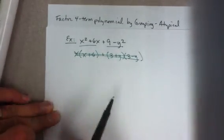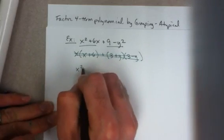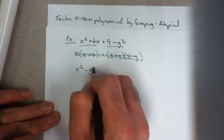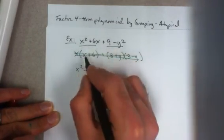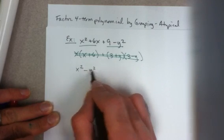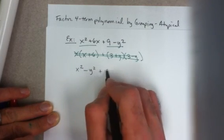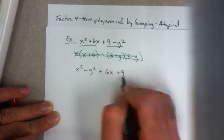Well, even another effort might be to rearrange the terms so that perhaps if you bring the negative y squared in front with the x squared, this is a difference of two squares. And then the remaining two terms can also be factored.